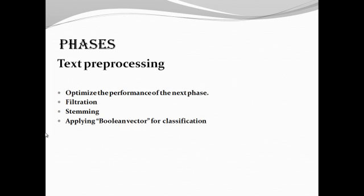Text preprocessing involves optimizing the performance. Filtration mainly involves the removing of stopwords. Stemming involves the removing of prefixes and suffixes. And finally, applying the boolean vector for classification.